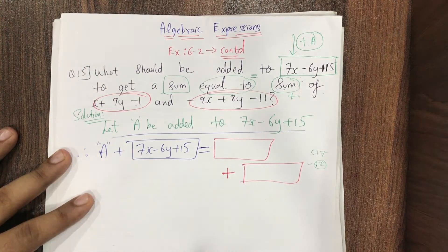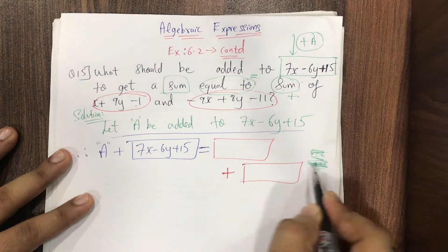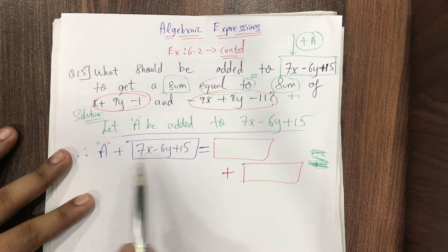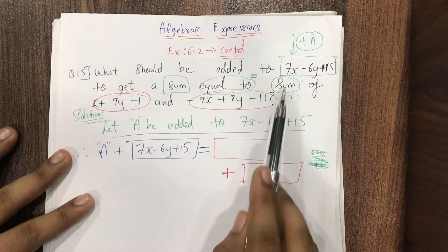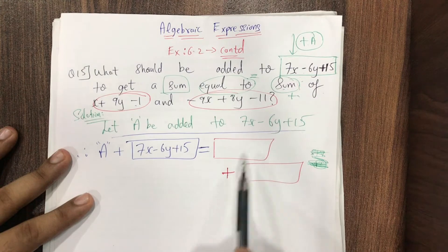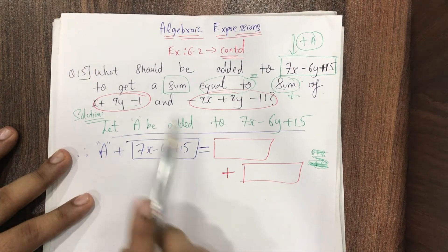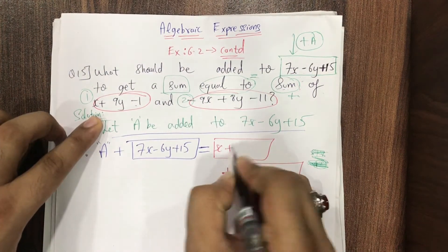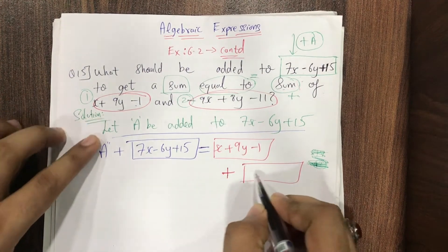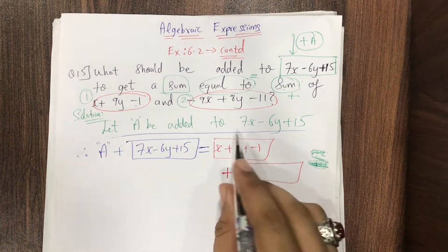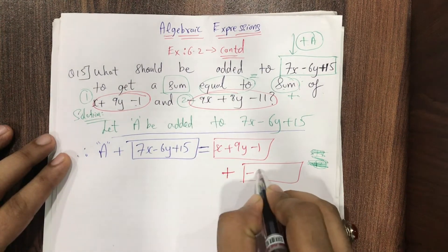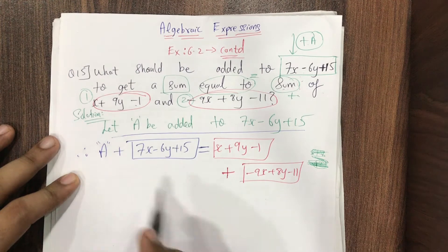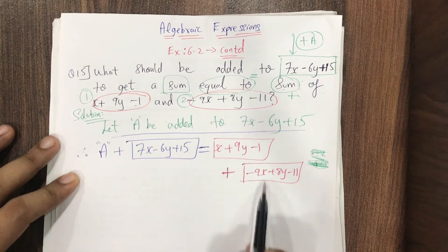The first polynomial is x plus 9y minus 1, and the second polynomial is minus 9x plus 8y minus 11. So: A plus (7x minus 6y plus 15) equals (x plus 9y minus 1) plus (minus 9x plus 8y minus 11).